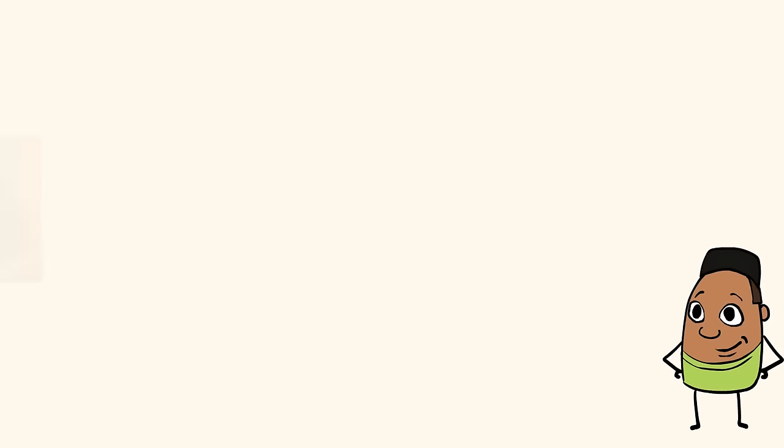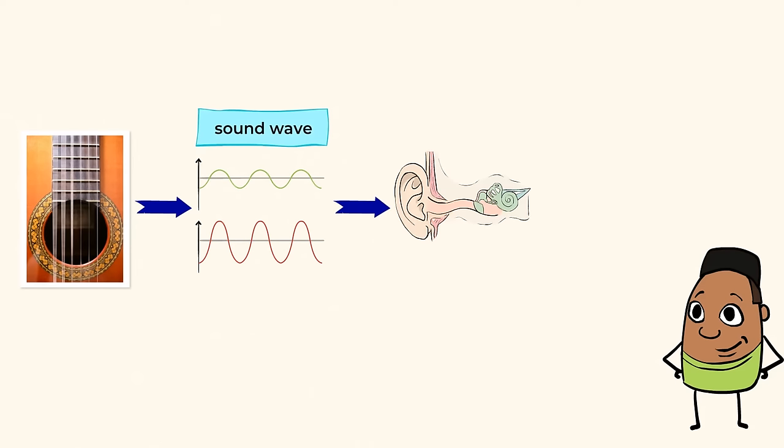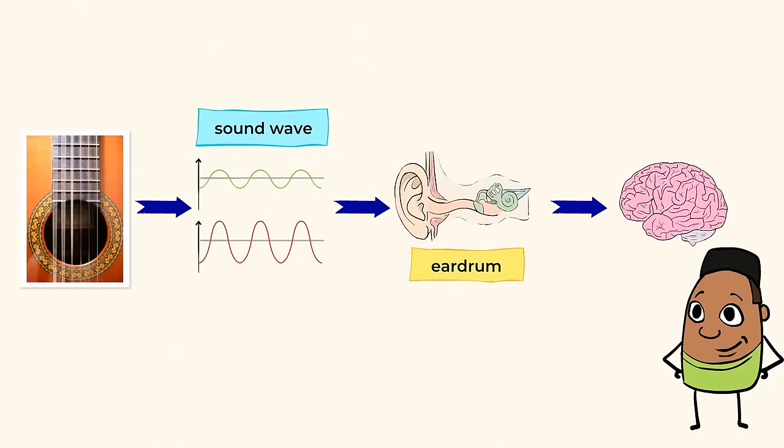Now, when the strings move back and forth, they also move tiny particles that are roaming freely in the air. This movement creates what is called a sound wave. These waves travel through the air. And when they reach our ears, they cause a part of our ear, called the eardrum, to vibrate. And when the eardrum vibrates, it sends sound signals to our brain. And that's how we hear sounds.